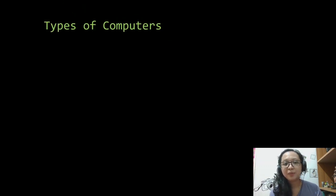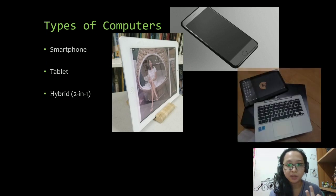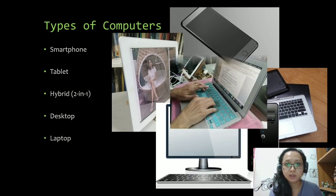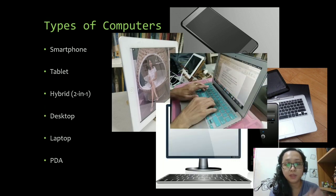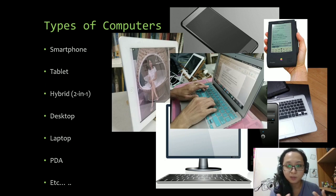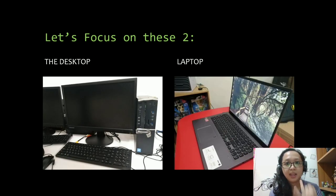Now there are so many types of computers that we all use every day. First is the smartphone. Then we have tablets. We have hybrids — these are the ones where you can detach one part and turn it into something else. We have the desktop computer. We have the very portable laptop. And for work, there are PDAs, though I'm not sure if there are still people who use this. We have so many more that might also be developed in the future. But today, let's just focus on the desktop and the laptop.